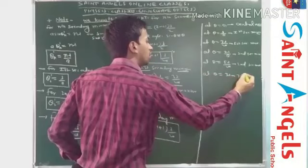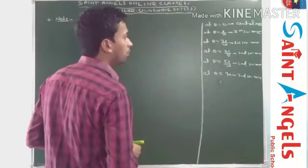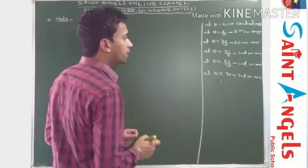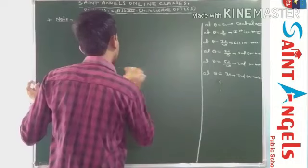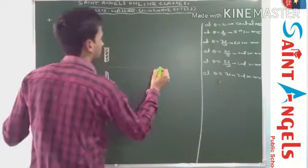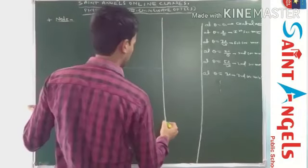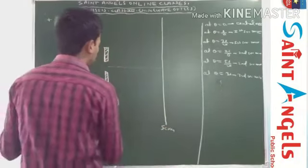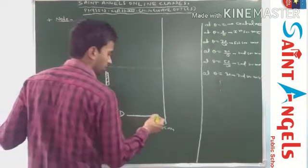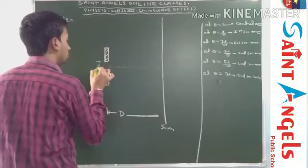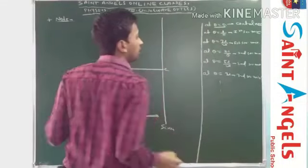Now we will plot the angular positions of secondary maxima and secondary minima on the screen according to these results. This is the slit and here is the screen placed at a distance of capital D from the slit. The width of the slit is small a.